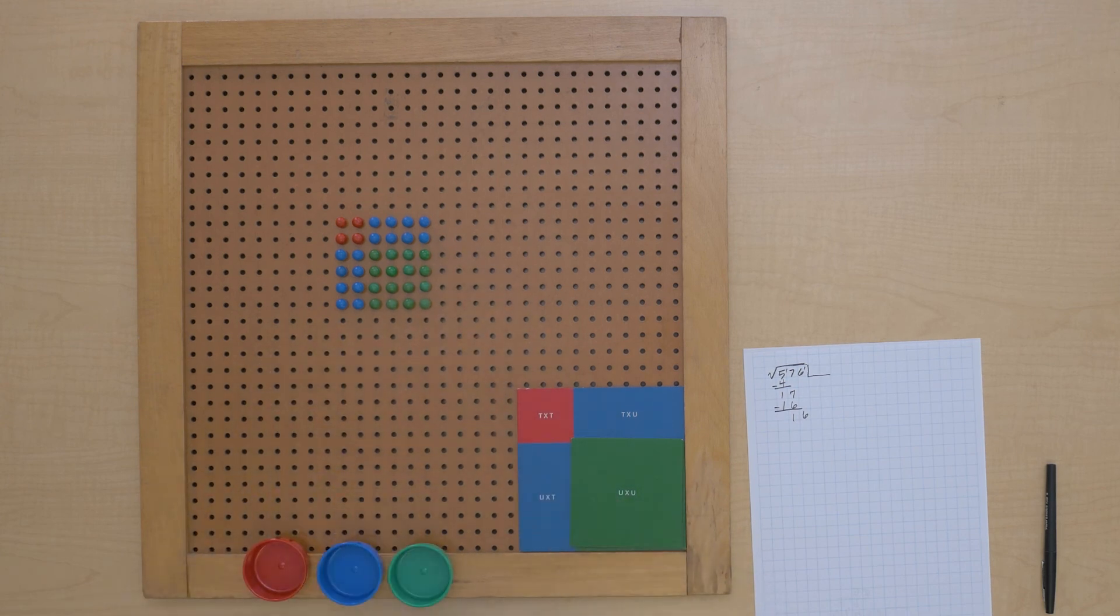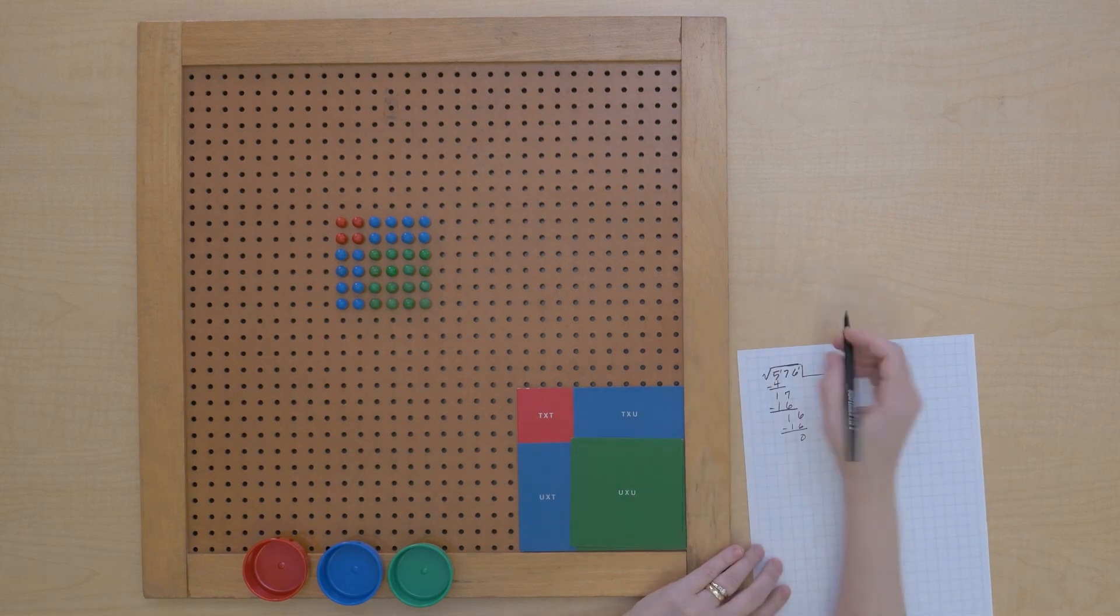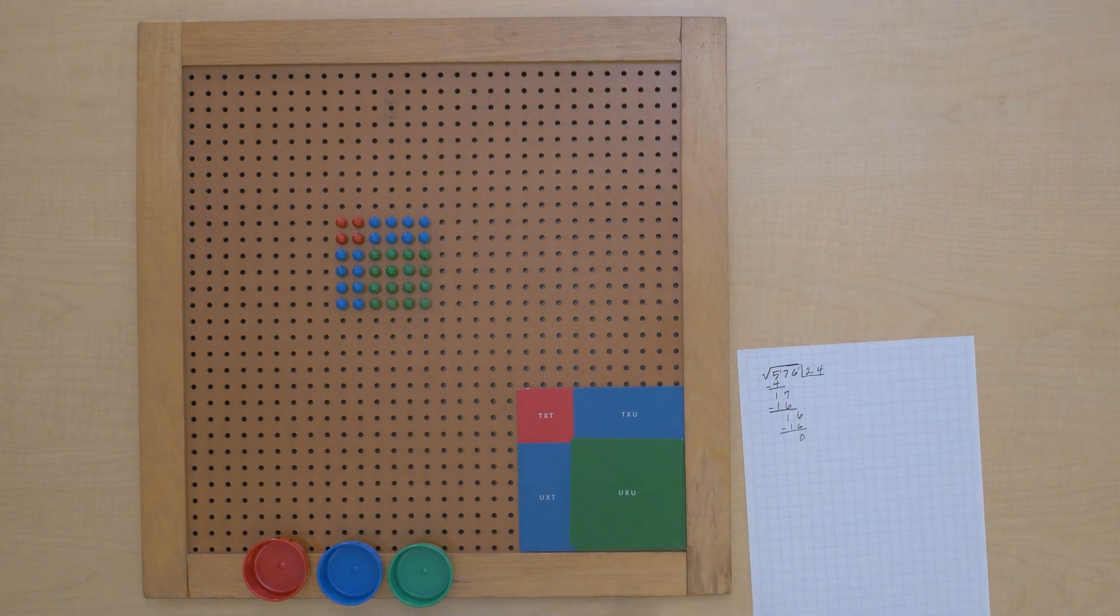Okay, so we had 16 units, we used 16 and we have nothing left, and our square root is 24. Let's do another problem like this with the writing.